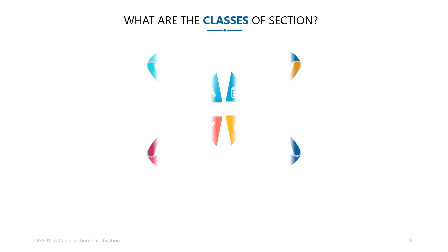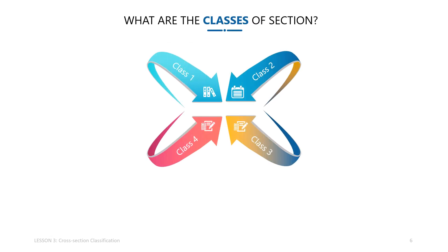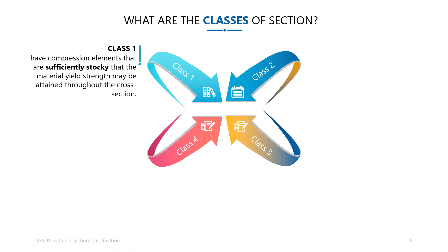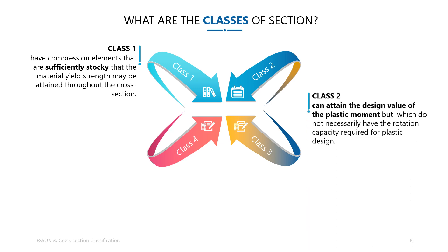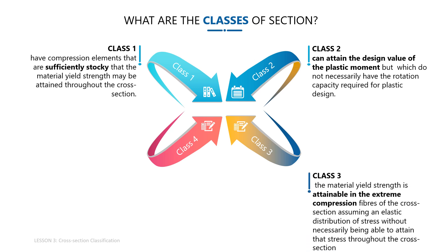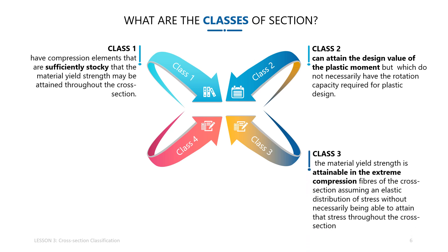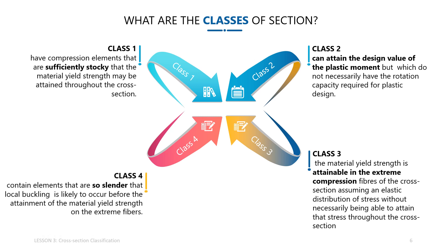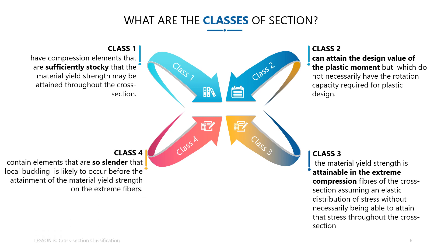Eurocode 3 introduces four classes of cross section: Class 1 cross sections are those which have compression elements that are sufficiently stocky. Class 2 cross sections are those which can attain the design value of the plastic moment. Class 3 cross sections are those in which the material yield strength is attainable in the extreme compression fiber. Class 4 cross sections are those which contain elements that are so slender that local buckling is likely to occur.